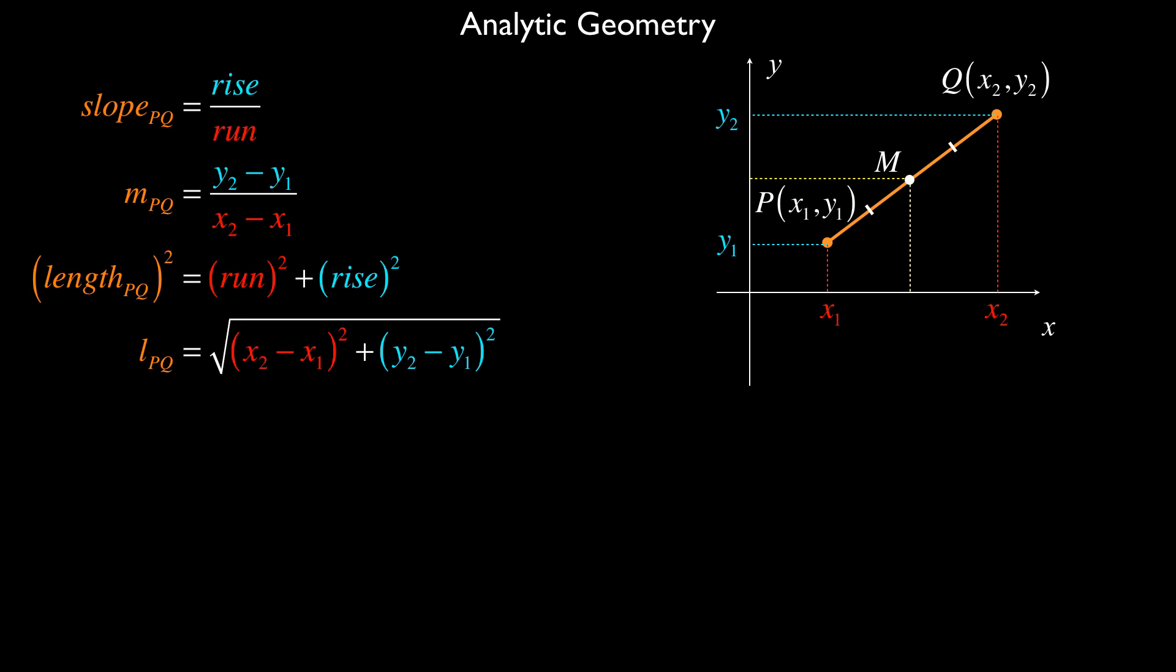If you were to take a look at the x-coordinate and the y-coordinate for that point, you might be able to reason out that the x-coordinate lies halfway between x1 and x2 if point M lies halfway between P and Q. So the question is, how do we find the halfway point between x1 and x2? That's really just simply the average of x1 and x2. We take x1 plus x2 and divide by 2.